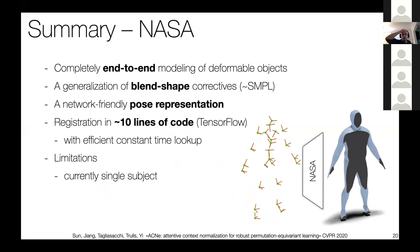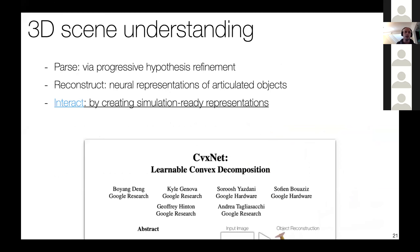In summary: we rewrote digital human representations end-to-end, provided a neural generalization of blend shapes, introduced a new artist-free pose representation, and implemented deformable ICP in 10 lines of TensorFlow. The current limitation is that we only focus on a single human, but generalization to multiple individuals should not be a major problem. This concludes the second part on reconstruction.